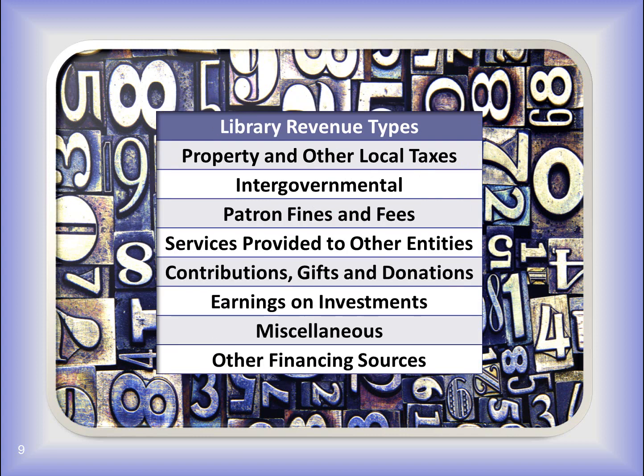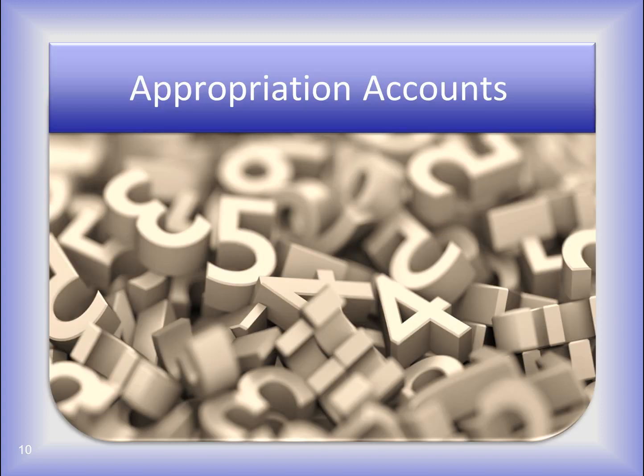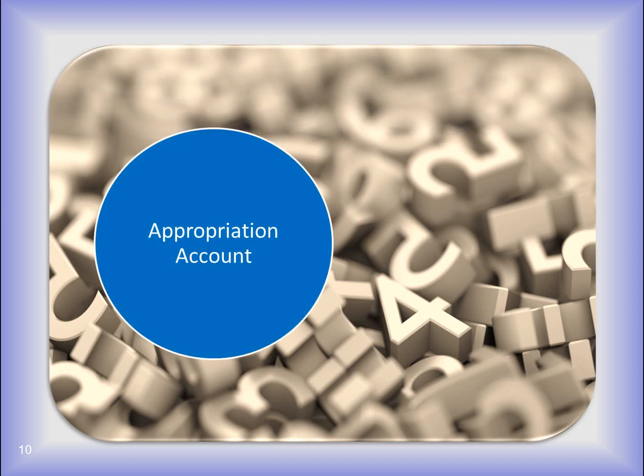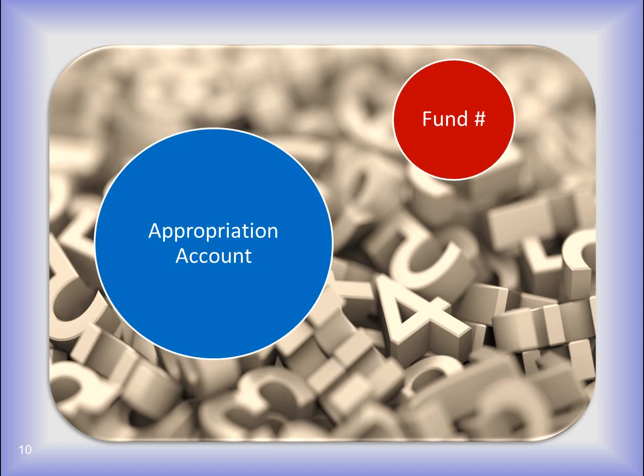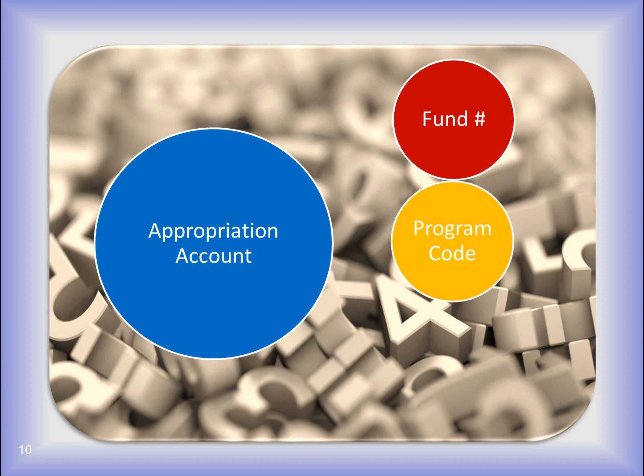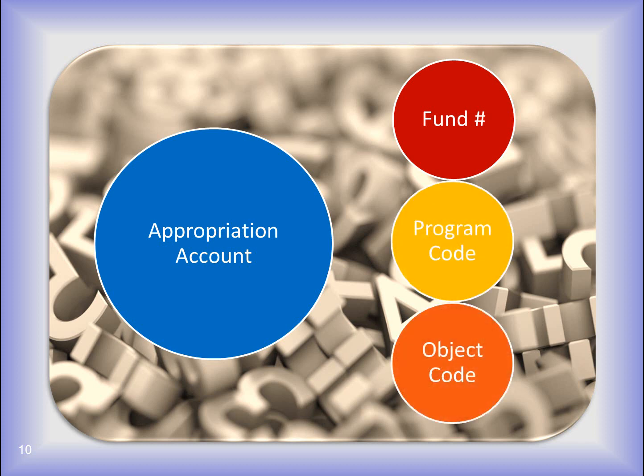And now on the screen are the revenue types that belong to the Library Chart of Accounts. Within each of these categories are more specific revenue codes. Appropriation accounts are used to classify expenditures. An appropriation account begins with a fund number, has a three-digit program code, and a three-digit object code.